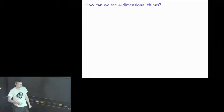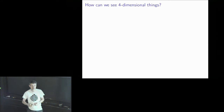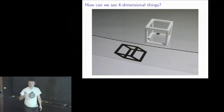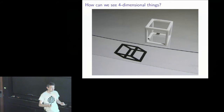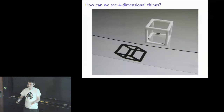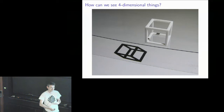We'd like a better picture of the hypercube — a way to actually see four-dimensional things. But I'm sorry to tell you, we can't. There's no way to do it. The best we can do is look at shadows of four-dimensional things. We've evolved in a three-dimensional universe, so we understand two-dimensional pictures of three-dimensional things. We have to squish four-dimensional objects down to three dimensions for our poor three-dimensional brains.